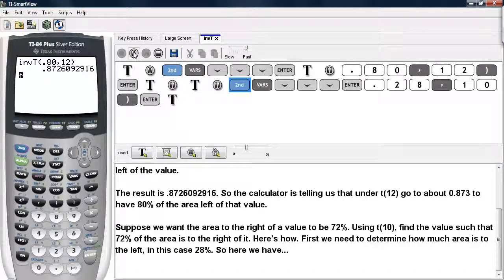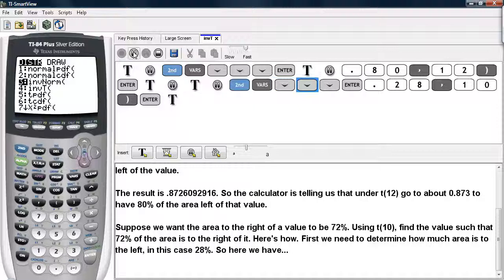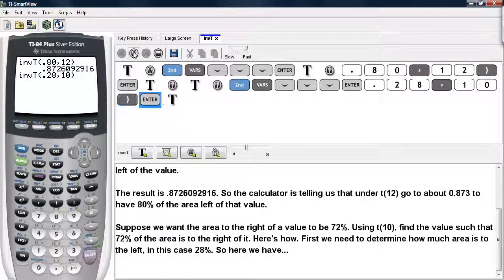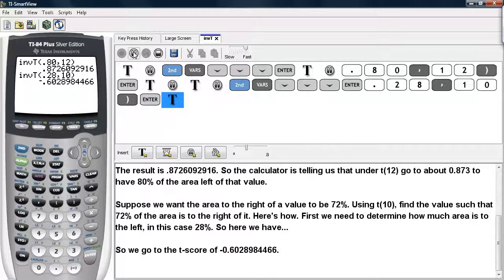I would go back under distribution, scroll down until you get to the INVT command, tell it the area left, in this case 0.28, and then the degrees of freedom, which is 10 in my example, and hit enter. And it says that you would need to go to negative 0.6 in order to get 72% of the area to the right of where that value is.